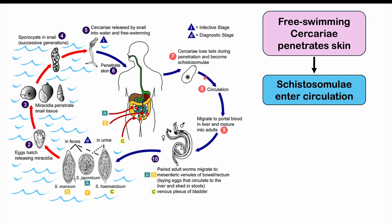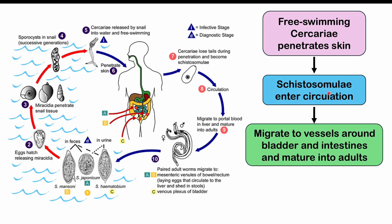Once cercariae enter into the skin, they become what we call schistosomulae. Those schistosomulae then enter into the circulation — into the bloodstream. They then migrate to blood vessels in and around the bladder and intestines and mature into adults. Some other species have a predilection for entering blood vessels around the intestines and liver, but Schistosoma hematobium has a predilection for entering blood vessels around the bladder, which is why we see an increased risk of bladder cancer.